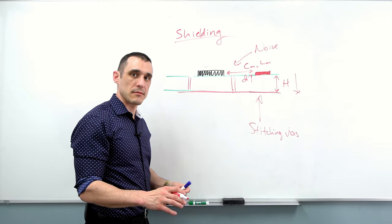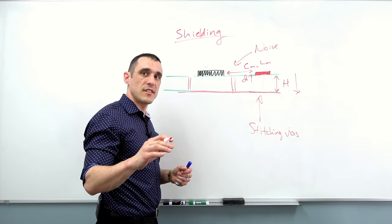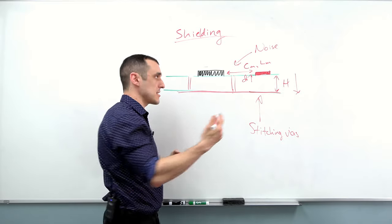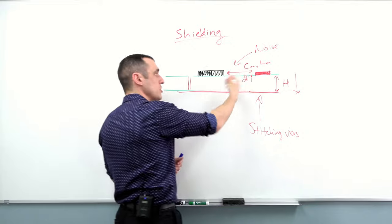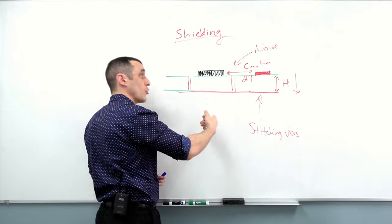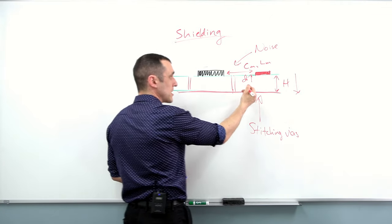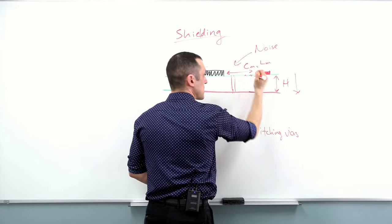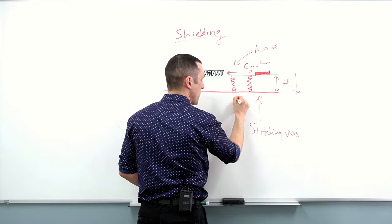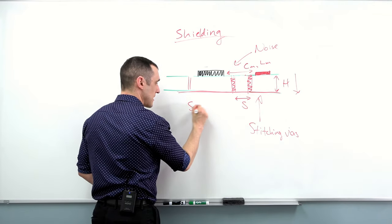Don't just pick some random value like two millimeter spacing and expect that it's always going to work for every frequency. We've discussed previously the role of stitching vias in copper pour and how they can either contribute to resonances that aid noise transfer between two circuits, or how they suppress resonances and prevent noise transfer between circuits. They do that by creating a resonant cavity between them. Let's say I've got two vias separated by some distance s.